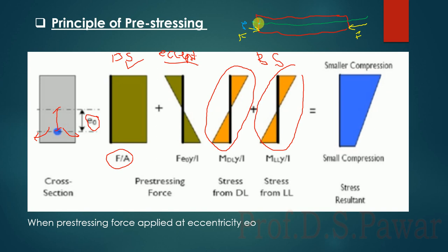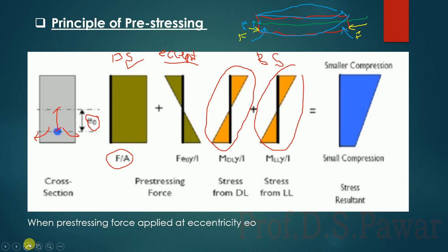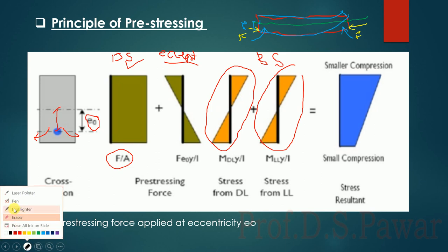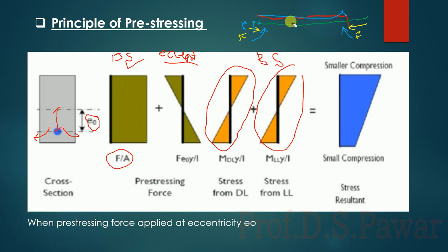If you take the moment at the centroid axis, the two forces move upward and produce a moment. The section behaves exactly opposite to what happens with dead load and live load. That value we consider is force times eccentricity — that is the moment P into E — divided by Z.